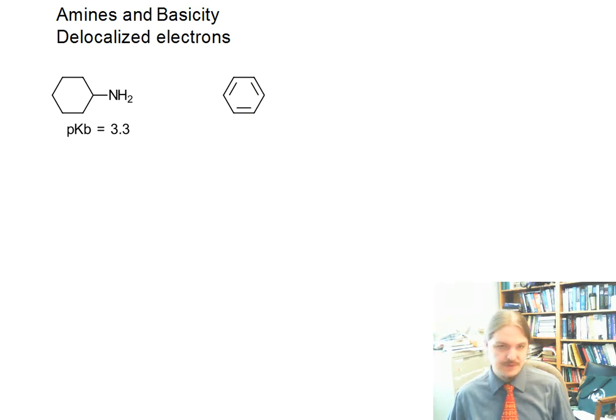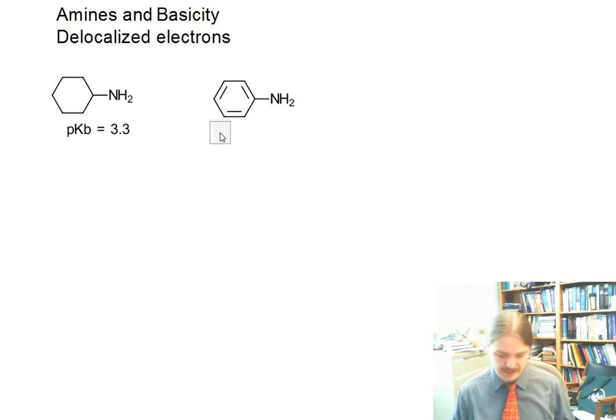Aniline has a pKb of 9.4. This is a big difference. Aniline is much less basic than cyclohexylamine, and substituted anilines are pretty similar. They vary by a pKb unit or so.